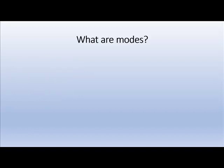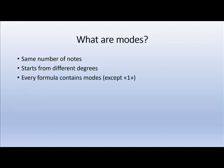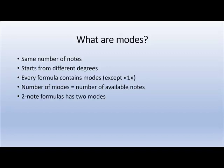So what are really modes? Modes always have the same number of functions as the formula from which they're derived and exist in only one combination from each degree. Every formula contains modes, except the one formula. The number of modes equals the number of available notes. So a two-note formula has two modes, a three-note formula has three modes, and so forth.